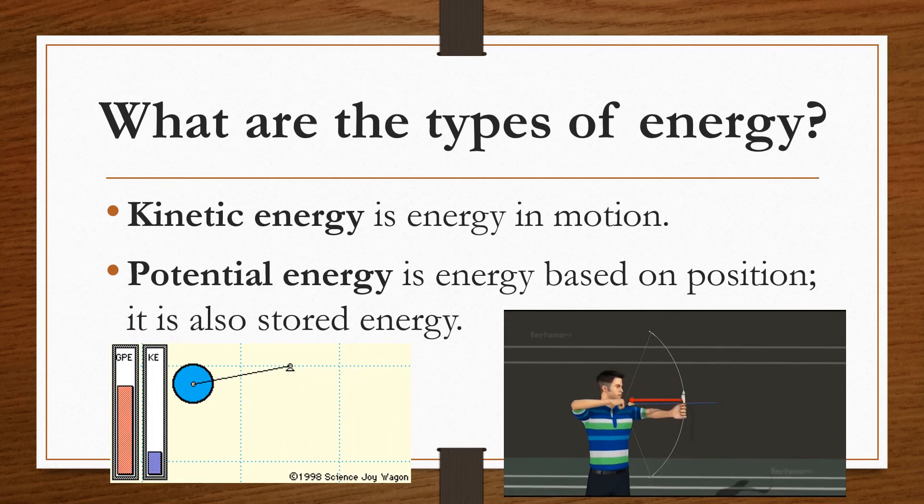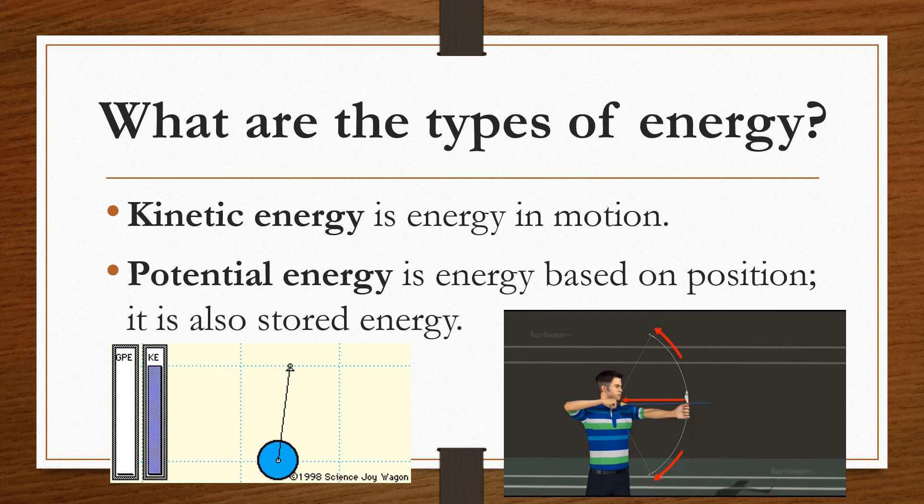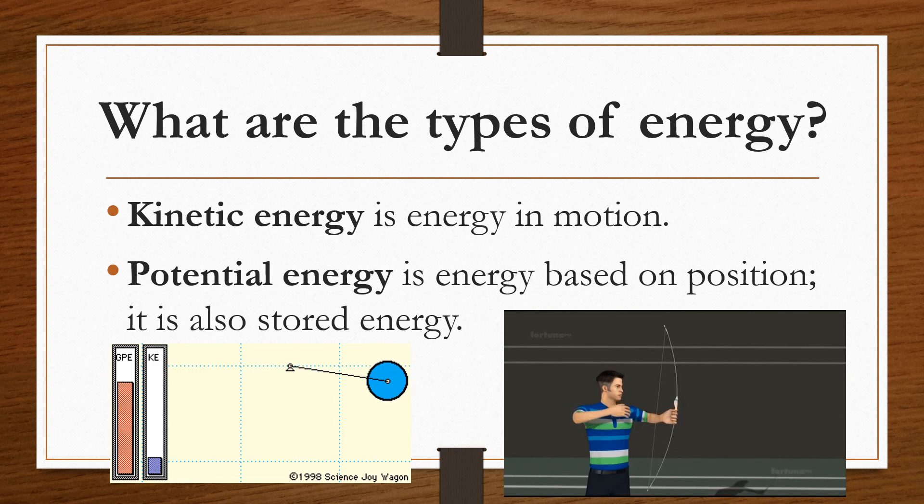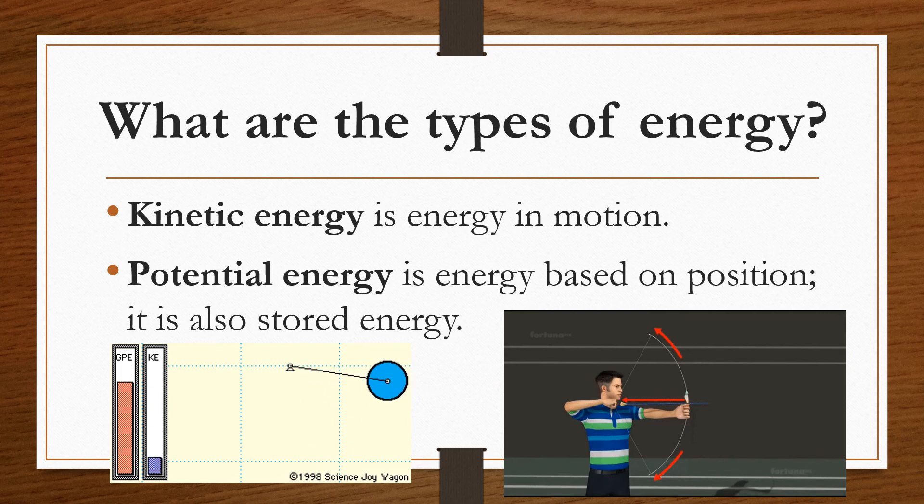What are the types of energy? There are two types of energy: kinetic energy, which is energy in motion, and potential energy, which is energy based on position and is also known as stored energy.